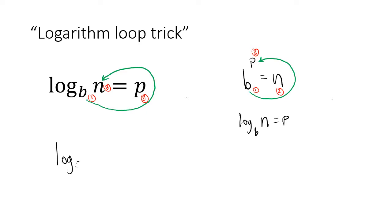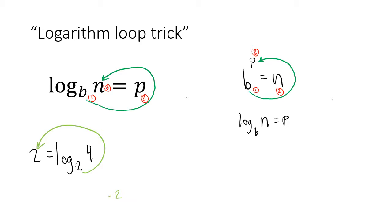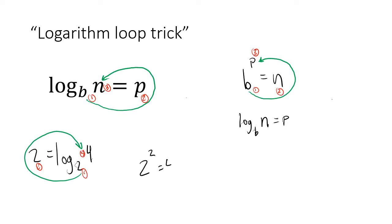Just to emphasize the importance of going in the direction of the equal sign: if I wrote log base 2 of 4 equals 2 — or written backwards as 2 equals log base 2 of 4 — and I did the loop trick going the wrong way, I'd get 2 to the 4th power equals 2, which is not right. You have to go in the direction of the equal sign. Done correctly, we get 2 to the 2nd power equals 4, so the things we pass by in order — 1, 2, 3 — give us 2 squared equals 4.